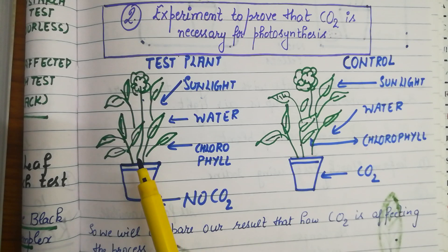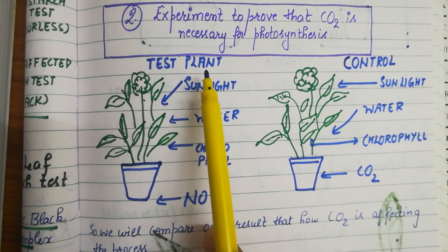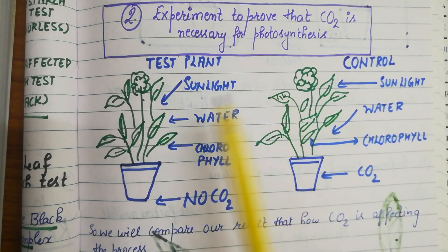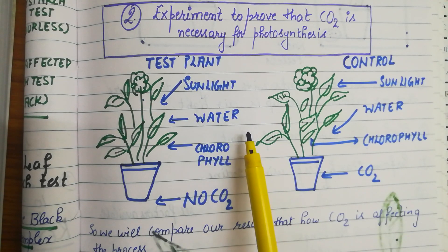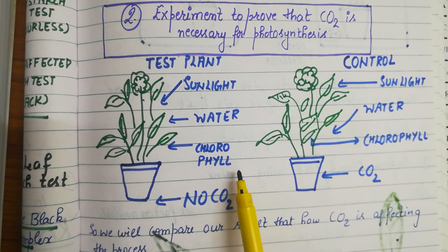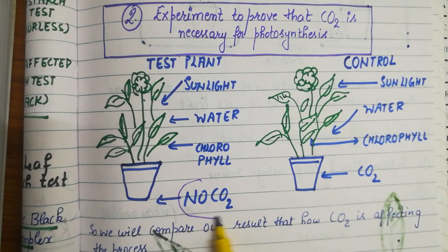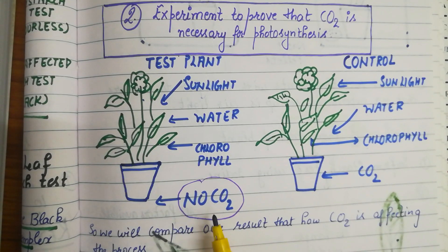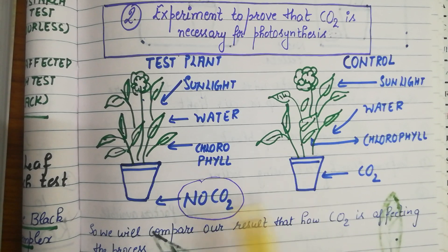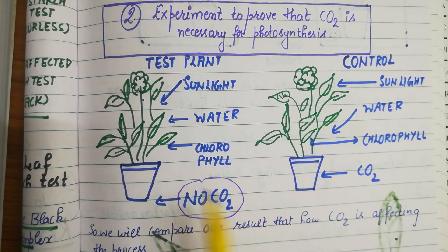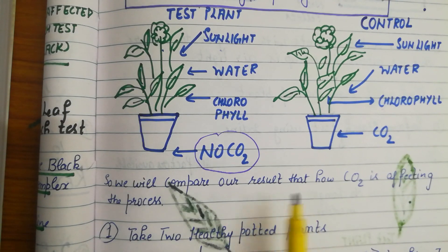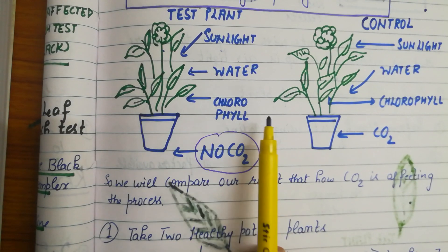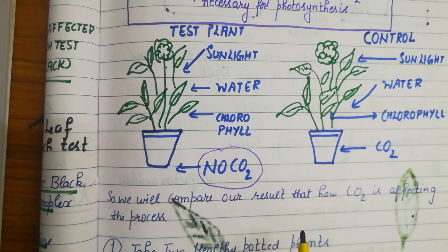The plant in which we are going to perform the experiment is called our test plant. As you can see, sunlight is given to it, water is provided, chlorophyll is given, but no CO2 is given to this plant. That is the difference between the control and test plants, and we are going to compare our results.